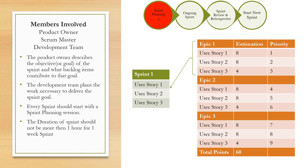The next stage is sprint planning. Members involved are the product owner, the scrum master, and the development team. The product owner describes the objective or goal of the sprint — for example, the goal would be to finish sprint one with login functionality. The development team then plans the work necessary to deliver the sprint goal. Every sprint should start with a sprint planning session, and the duration of sprint planning should not be more than one hour for a one-week sprint.